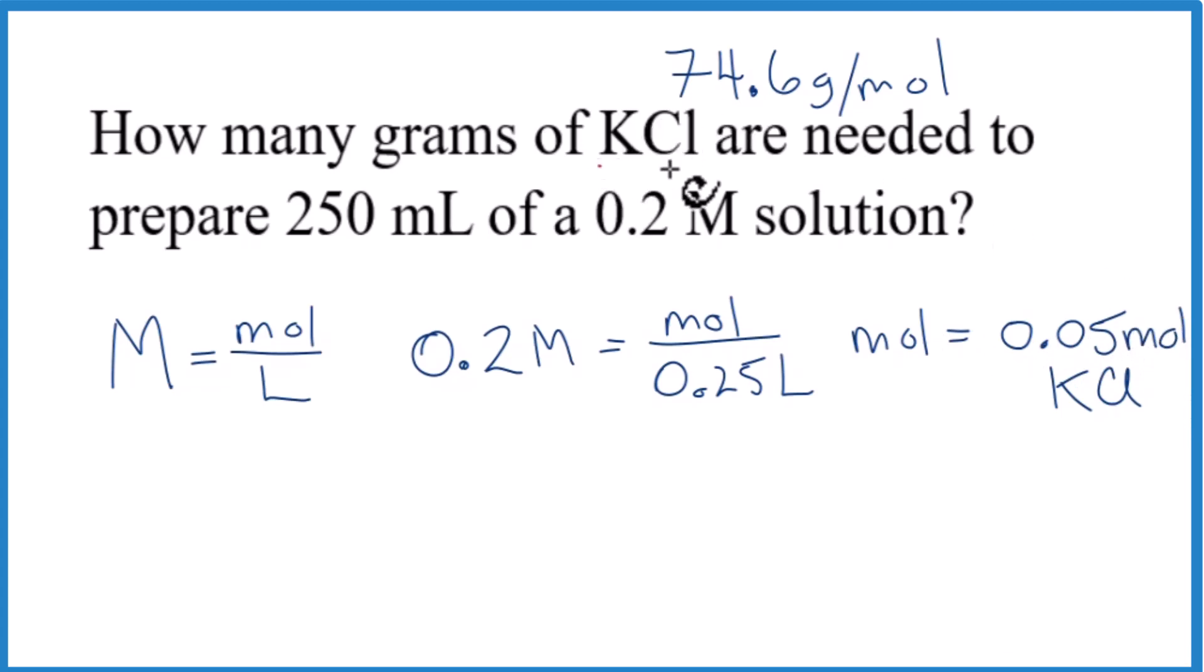Now we multiply this by the molar mass of KCl, which we have up here, and we get 3.7 grams of KCl. So that's how much of the solute of the solid KCl we need to make our 250 milliliters of our 0.2 molar solution.